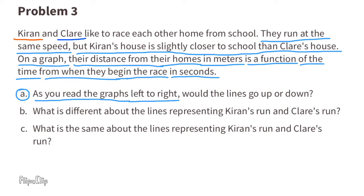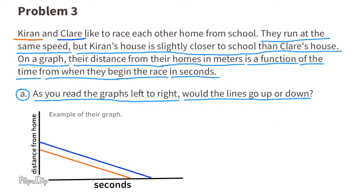As you read the graphs left to right, would the lines go up or down? This example of their graph shows that the distance from home at the start of the race is greatest, and the distance from home at the end of the race is smallest, so their lines would go down from left to right.